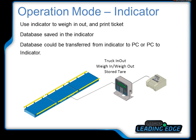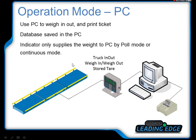Let's talk about indicator-based first. In this mode, the operator uses the indicator to weigh in, weigh out, and print tickets. In PC-based mode, the indicator connects to the scale and supplies the weight to the PC, and the operator uses the PC to weigh in, weigh out, and print tickets.